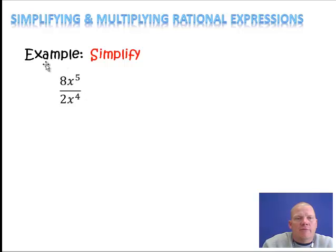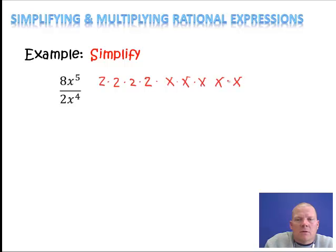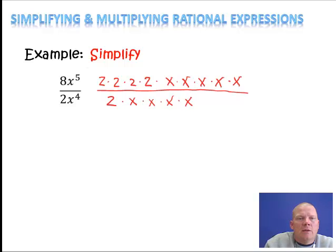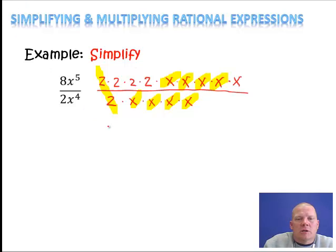Let's write this in factored form — the numerator and the denominator each. So 8, I'm going to write as 2 times 2 times 2, and then I have 5 x's. Some of you will be able to do this without writing it out. The denominator is going to be 2 and 4 x's. Then I'm going to cancel things out: I can cancel a 2 on the top and bottom, and I can cancel 1x, 2x, 3x, and 4x.